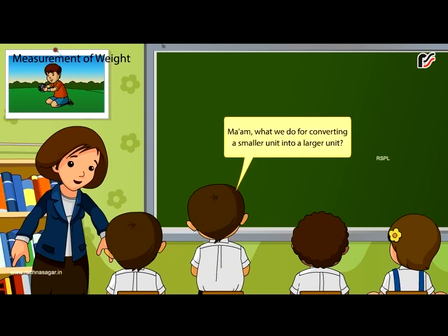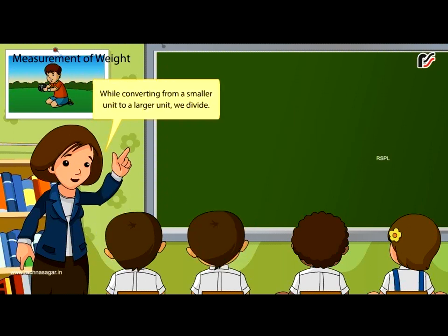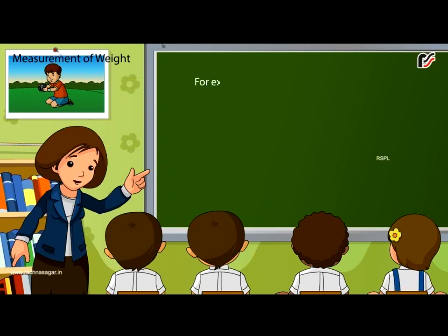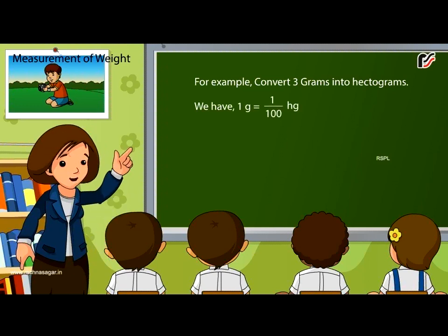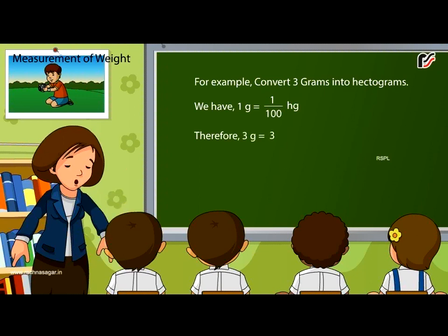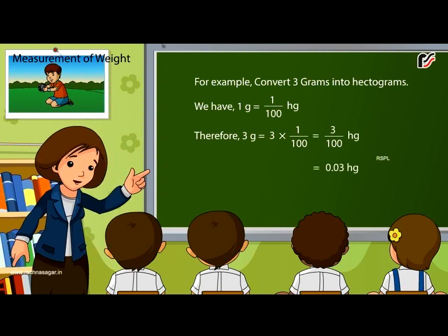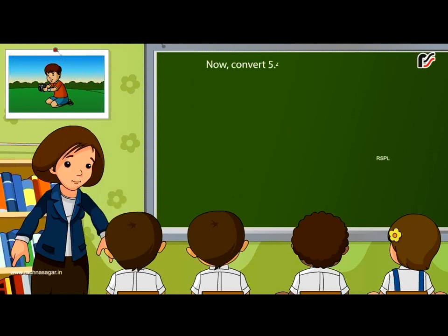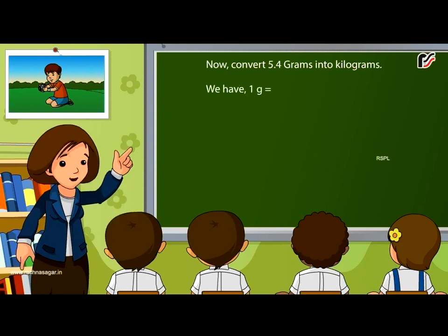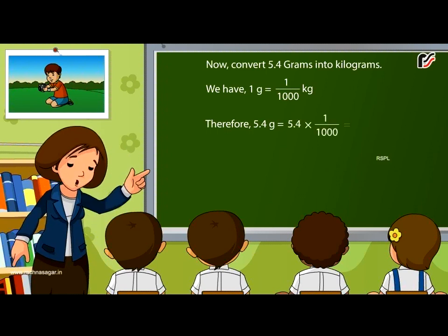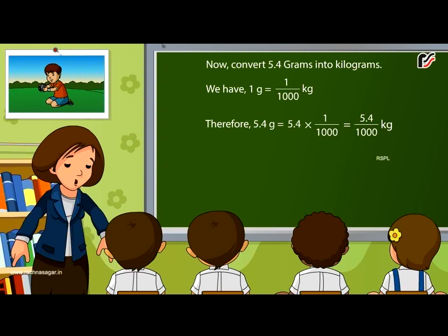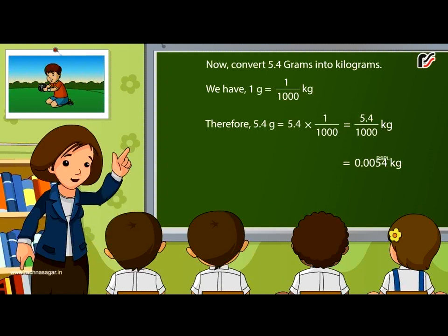While converting a smaller unit into a larger unit, we divide. For example, convert three grams into hectograms. We have one gram is equal to one upon one hundred hectograms. Therefore, three grams is equal to three multiplied by one by one hundred, which equals three by one hundred hectograms, equal to zero point zero three hectograms. Now convert five point four grams into kilograms. We have one gram is equal to one upon one thousand kilograms. Therefore, five point four grams is equal to five point four by one thousand kilograms, equal to zero point zero zero five four kilograms.